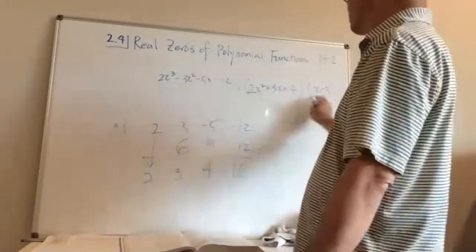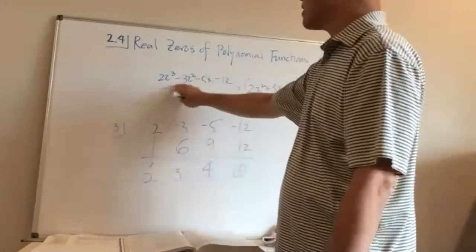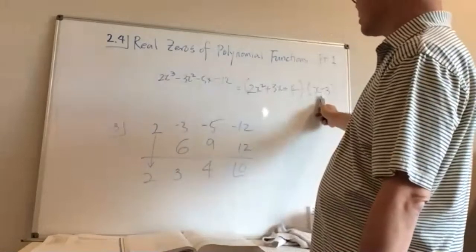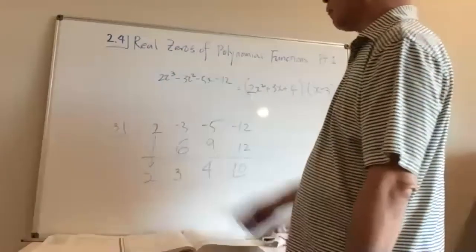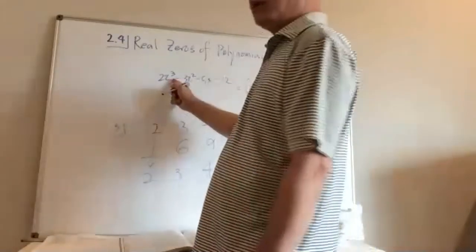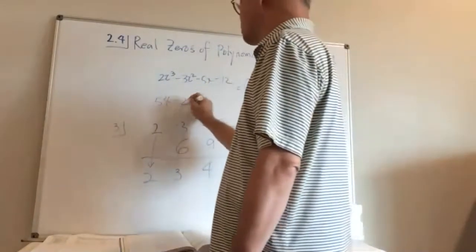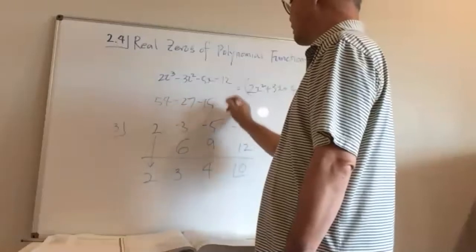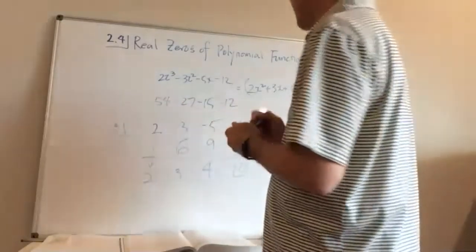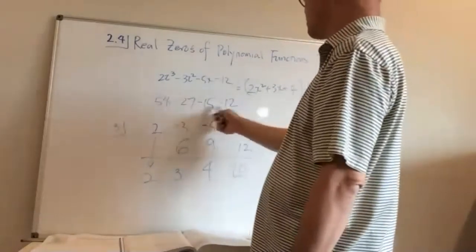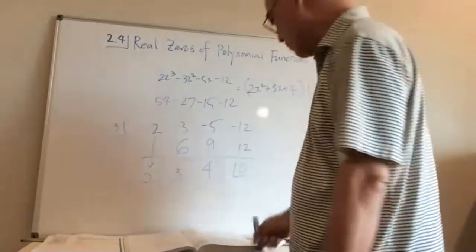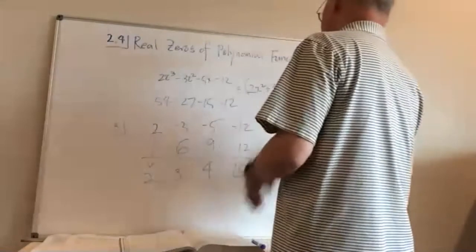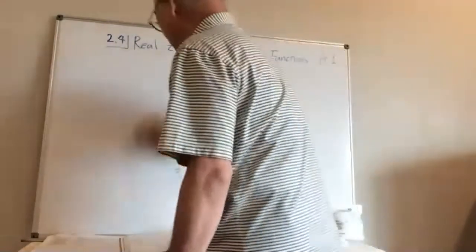Since the remainder is zero, x - 3 is a factor and x = 3 is a solution. Let's verify: plugging x = 3 into 2x³ - 3x² - 5x - 12 gives 2(27) - 3(9) - 5(3) - 12 = 54 - 27 - 15 - 12 = 0. It checks out.